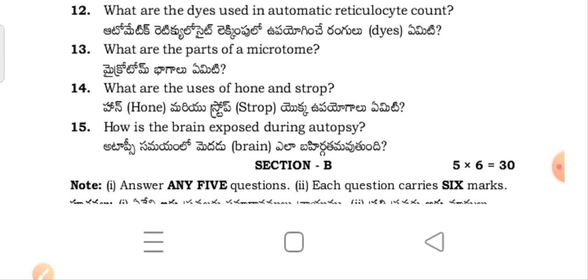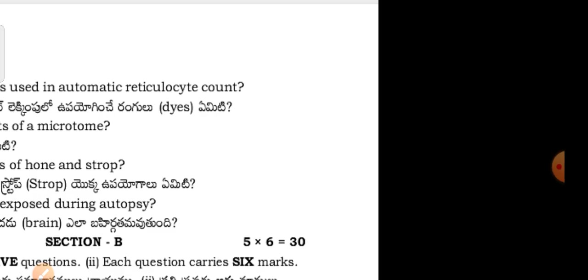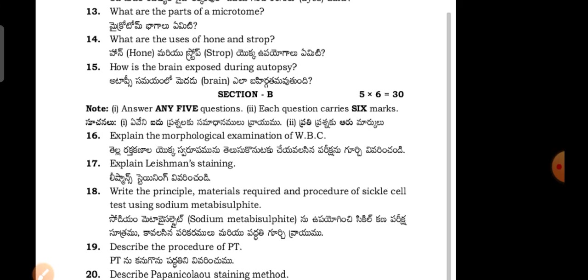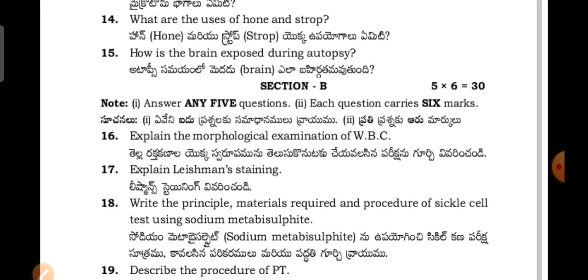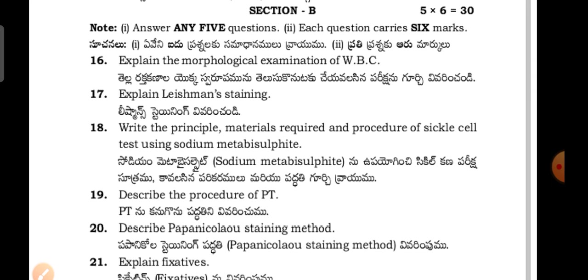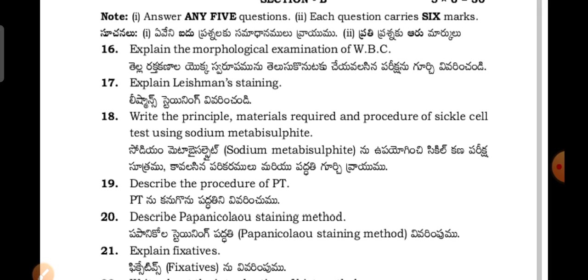What is the meaning of lupus erythematosus? What are the dyes used in automatic reticulocyte count? What are the parts of the microtome? What are the uses of the Haemocytometer (Horner and Stroker)? How is the brain exposed during autopsy?